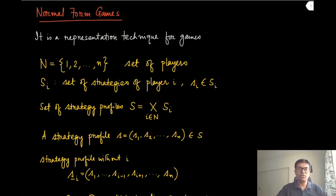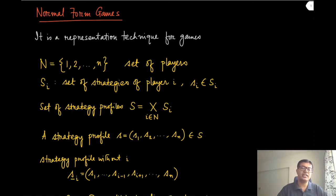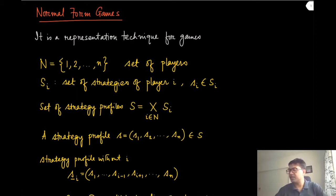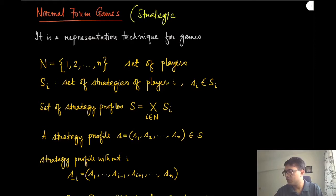Now that we know about games through certain examples — their players, actions, strategies, etc. — it's the right time to make things a little more formal, developing the notation and notions we'll be using in the rest of this course. The first thing we are going to discuss is the normal form representation of games, sometimes also called strategic form games. These two terms are used interchangeably in game theory literature.